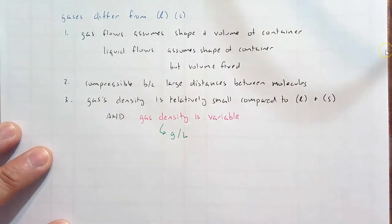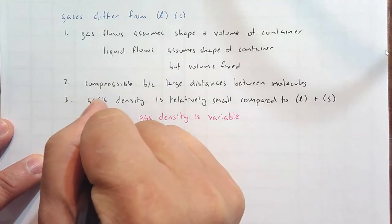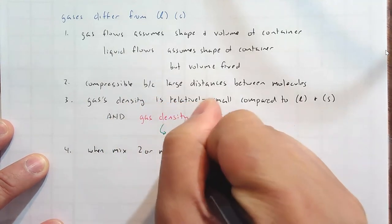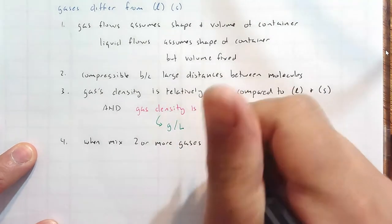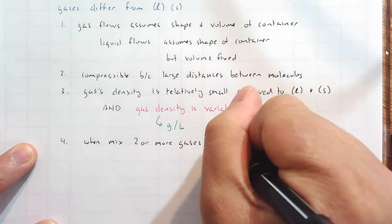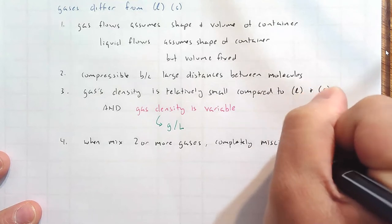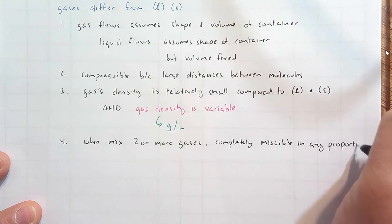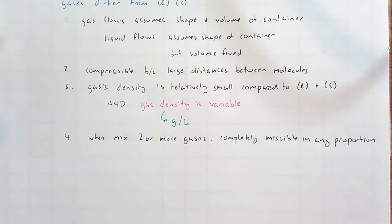Number four, when you mix two or more gases, those gases are totally immiscible, completely immiscible in any proportion. Okay. That's four ways gases differ from liquids and solids.